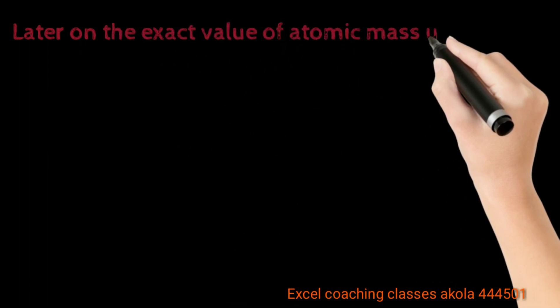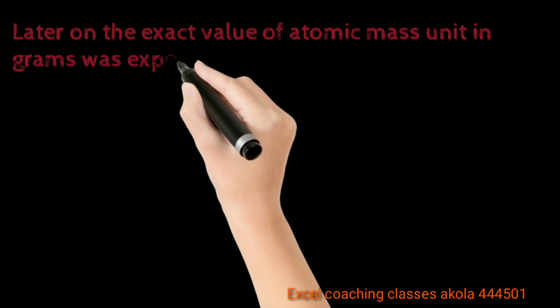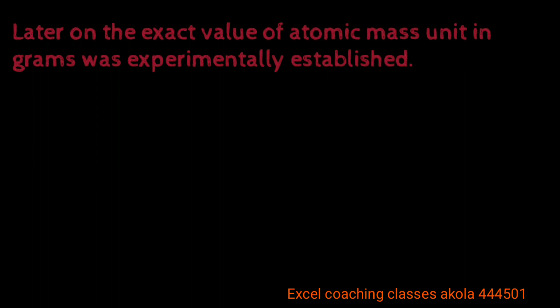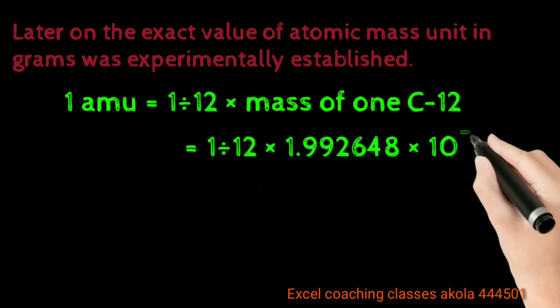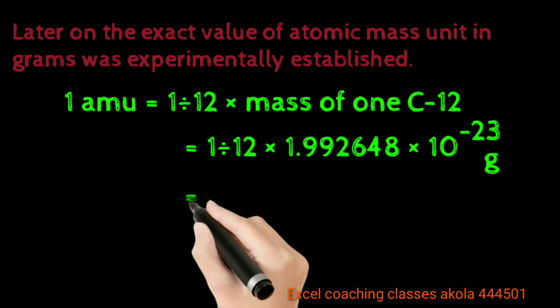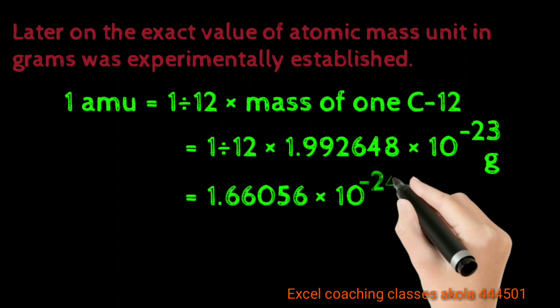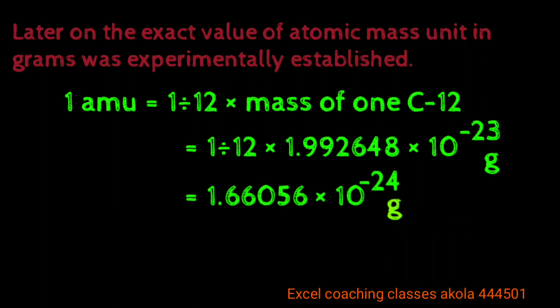The atomic mass unit in grams was experimentally established as the unified mass unit. One unified mass means one-twelfth part of the mass of a carbon-12 atom. One-twelfth of the mass of carbon, which is 1.9926 × 10⁻²³ grams — if you multiply it by 1/12, it becomes 1.6056 × 10⁻²⁴ grams, which is actually 1 AMU. This is how the gram conversion to unified mass works.